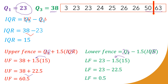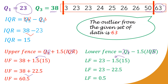Looking at our data set, 0.5 falls before the number 3, so the lower fence is placed there. The only value that appears outside the fences is 63. Therefore, we conclude that the outlier from the given set of data is 63.